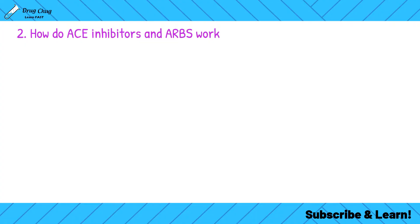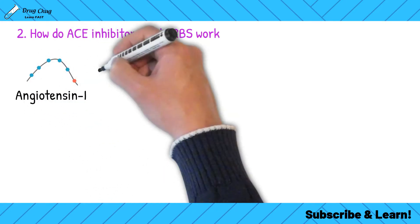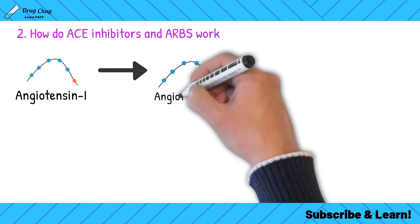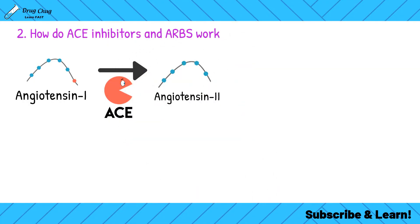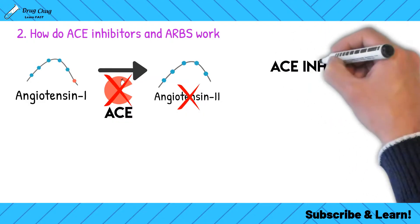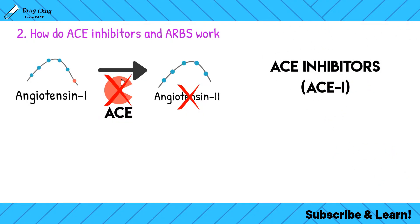Now let's talk about how ACE inhibitors work. Angiotensin 1 converts to angiotensin 2 through the ACE enzyme, and angiotensin 2 causes increased sodium, increased water, and increased aldosterone. So a good drug target would be the ACE enzyme — if we block the ACE enzyme, we block the production of angiotensin 2. That's exactly what ACE inhibitors do.